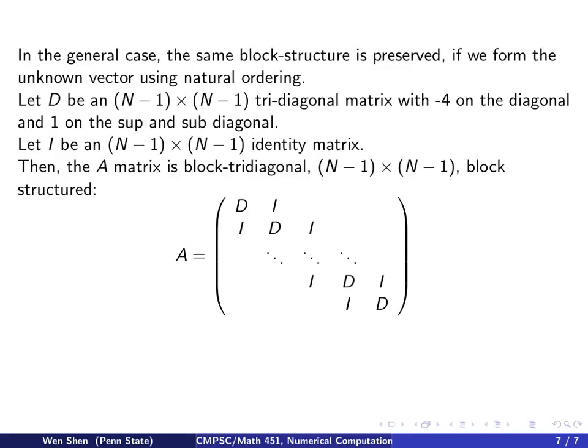Then the A matrix is block tridiagonal, (N-1) × (N-1) with a block structure as here. On the diagonal you have Ds, and upper diagonal is identity, lower diagonal is identity matrix. Remember each piece here is on its own an (N-1) × (N-1) square matrix. And then A is (N-1) × (N-1) squared matrix with blocks. You can simply calculate and find out that the A matrix will finally have the size (N-1)² × (N-1)².